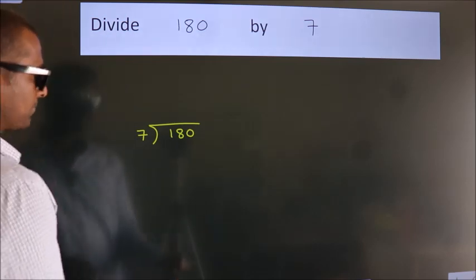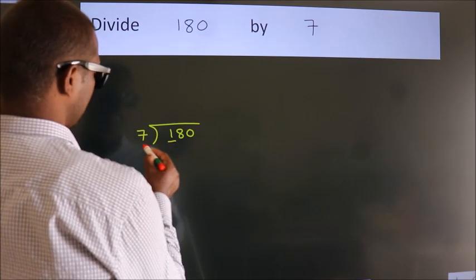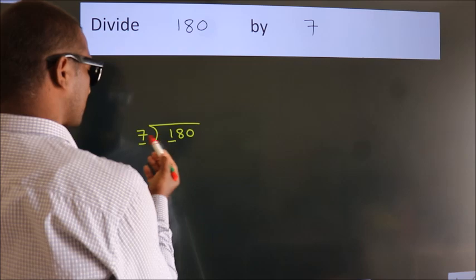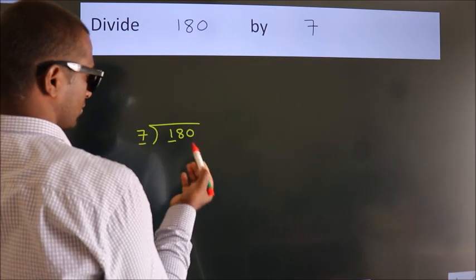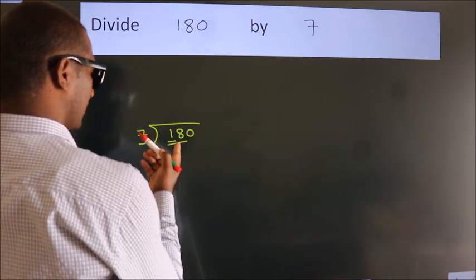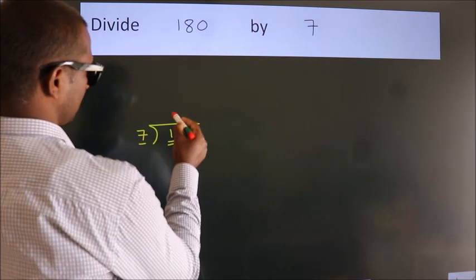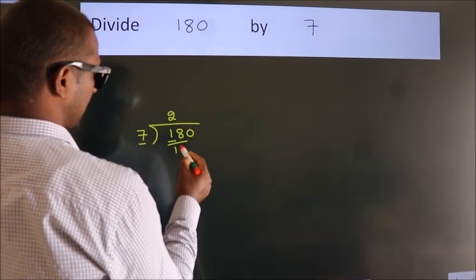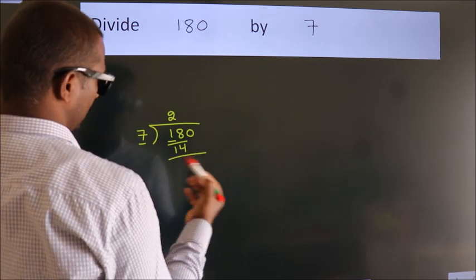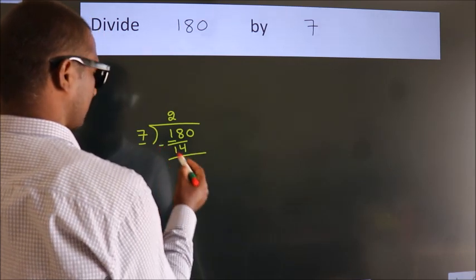Next, here we have 1, here 7. 1 is smaller than 7, so we should take two numbers: 18. A number close to 18 in the 7 table is 7 twos, 14. Now we should subtract. We get 4.